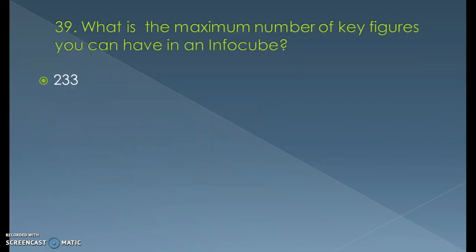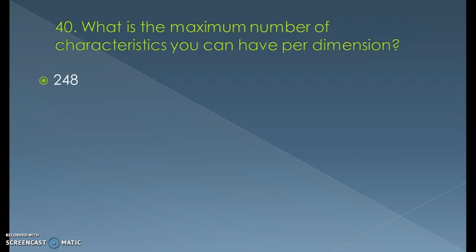What is the maximum number of key figures you can have in an infocube? The maximum number of key figures in an infocube is 233. What is the maximum number of characteristics you can have in a dimension? That would be 248. And how many dimensions can we have at maximum in a cube? That will be 13. So 13 multiplied by 248 is the maximum number of characteristics we can have in a particular cube.